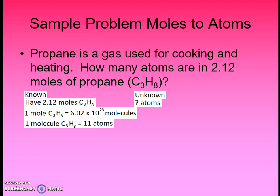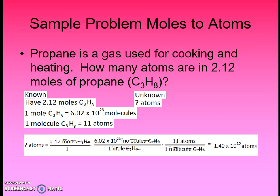Now we put these conversion factors together, starting with our given — 2.12 moles of propane — over 1. We place moles of propane in the denominator of our first conversion factor, which contains 6.02 times 10 to the 23rd molecules of propane per mole, so moles cancel out, leaving us with molecules of propane. That doesn't match our unknown yet, so we continue. One molecule of propane equals 11 atoms, so placing molecules in the denominator cancels them out, leaving atoms. Since our remaining unit matches our unknown, we're done. Solving out, there are 1.40 times 10 to the 25th atoms within 2.12 moles of propane. That's how count relates to moles.